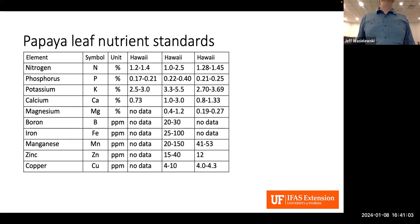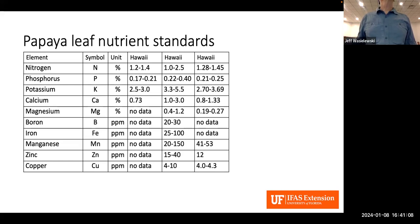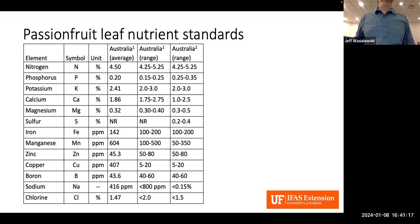Papaya leaf data is from Hawaii. Passion fruit data is entirely from Australia — there's an average and two different studies with different ranges.